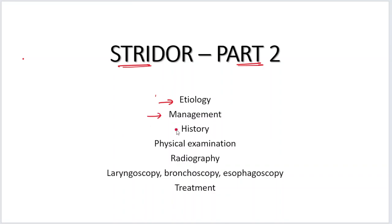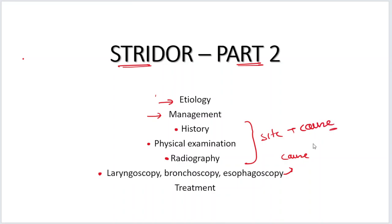In the management we are going to talk about the history — what questions you need to ask — physical examination, what you need to look for, radiography, what investigations you need to get done, laryngoscopy, bronchoscopy, and esophagoscopy to find out the cause of Strider. All this is basically to find out the site and then the cause of Strider so that you can treat the patient. So the treatment is the final part.